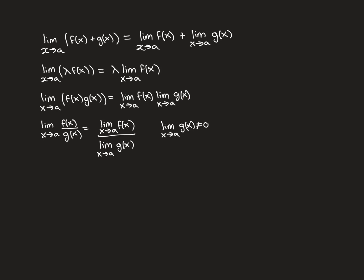The fourth and final result is that if you create a new function by taking a quotient of f(x) over g(x), and ask what is the limit as x approaches a of f(x) over g(x), then it equals the limit as x approaches a of f(x) divided by the limit as x approaches a of g(x), provided that the limit as x approaches a of g(x) is not equal to zero.